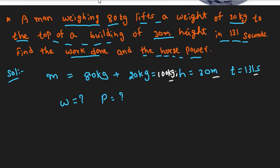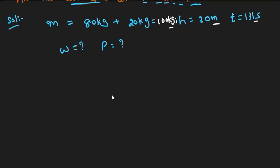To find work done: work equals mass into acceleration due to gravity into height. Mass is 100 kg, g is 9.8 meters per second squared.